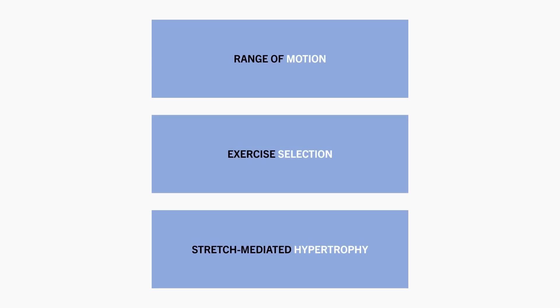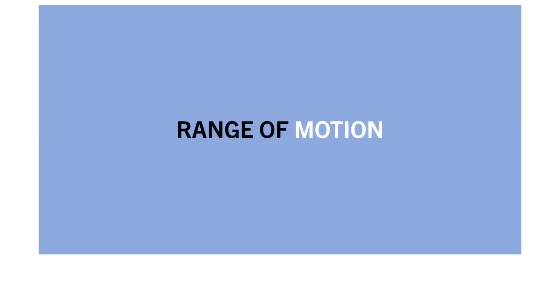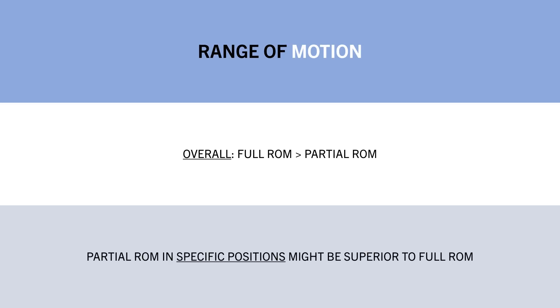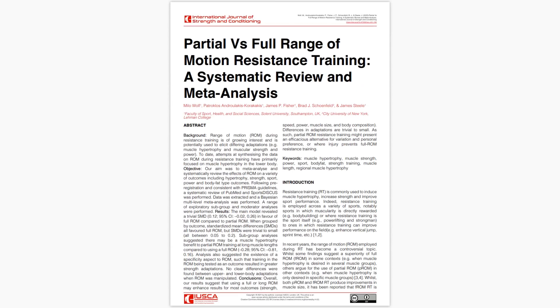There are a few different ways that we can look at this question. The first is by looking at range of motion. Overall, full range of motion lifting usually results in superior muscle growth compared with partial range of motion training. However, depending on which portion of the exercise the partial range is performed, partials are sometimes found to be superior compared with full range of motion. This was established in a meta-analysis which analyzed the evidence on range of motion and hypertrophy.